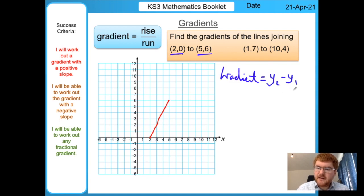We have our coordinates (2,0) and (5,6). Another way we can calculate the gradient is this formula: y2 minus y1 divided by x2 minus x1. You're thinking, where do these random y2s and x1s come from?